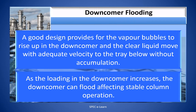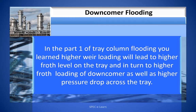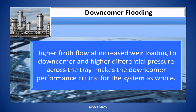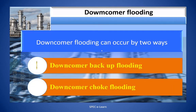As the loading in the downcomer increases, the downcomer can flood, affecting stable column operation. Higher weir loading leads to higher froth level on the tray and in turn to higher froth loading of the downcomer, as well as higher pressure drop across the tray. Downcomer flooding can occur in two ways: one — downcomer backup flooding; two — downcomer choke flooding.